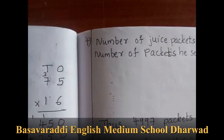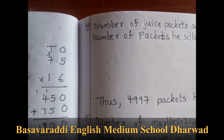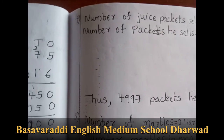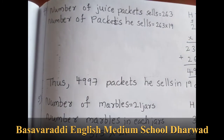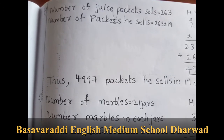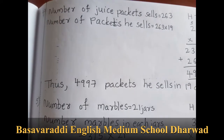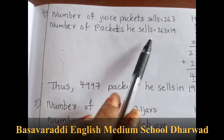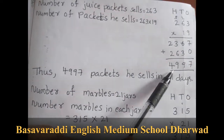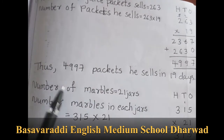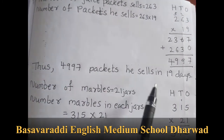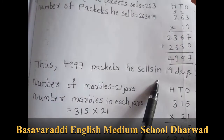Fourth one: A shopkeeper sells 263 packets of juice in a day. How many packets does he sell in 19 days? So 263 into 19. The answer is 4997 packets he sells in 19 days.